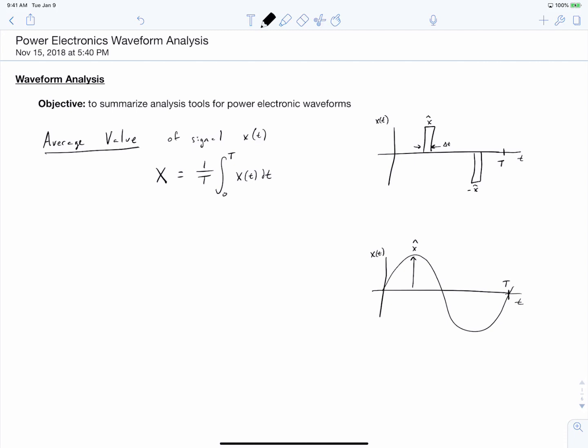We're going to start by talking about the average value of a waveform. The average value can be calculated by integrating the waveform x of t, some arbitrary waveform x of t, and dividing that over the fundamental period of that waveform.